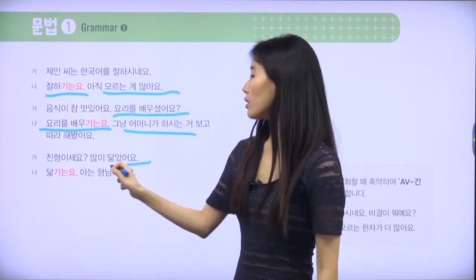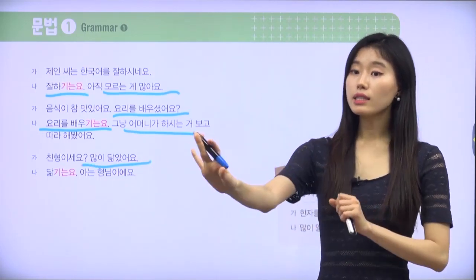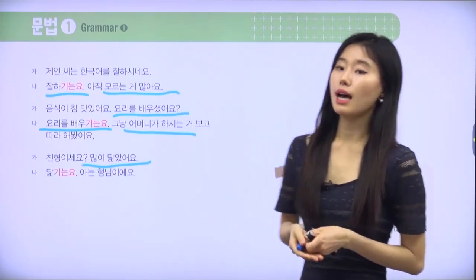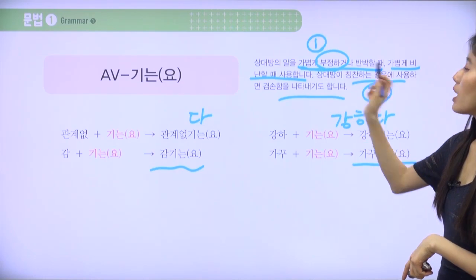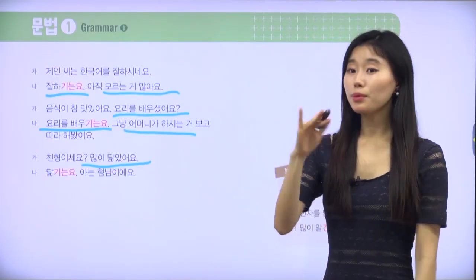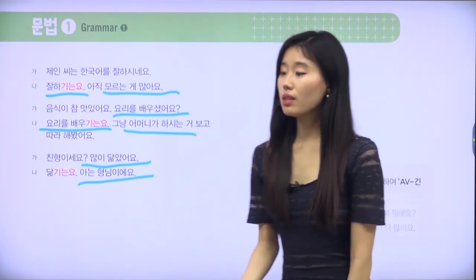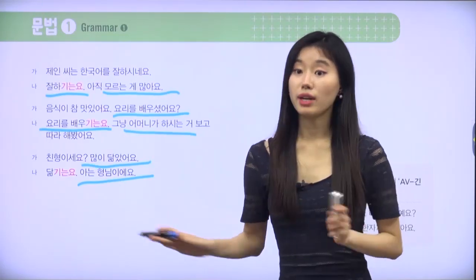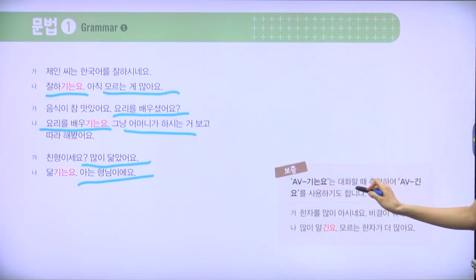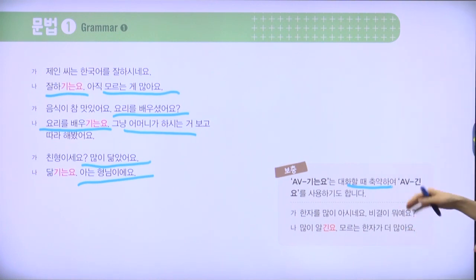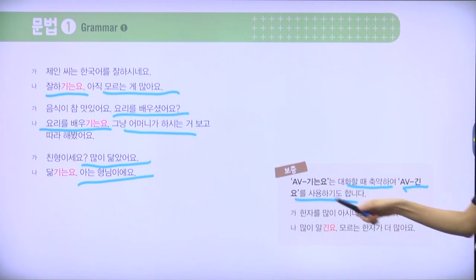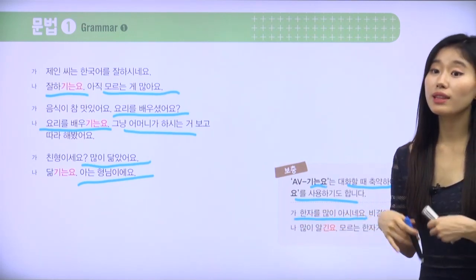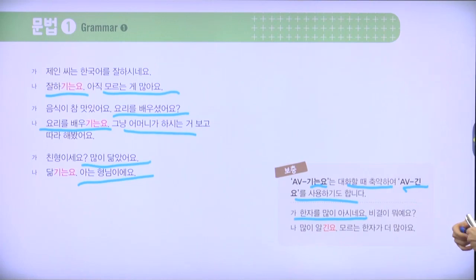친형이세요? 되게 닮았어요 — 'Are you actual siblings? You look very alike.' 아이고, 닮기는요 — this one is NOT being humble, it's casual disagreement. 저 그렇지 않아요, 그냥 아는 형님이에요 — 'We're not siblings, he's just an older friend I know.' Also, when speaking in conversation we can shorten 기는요 — 축약해서 긴요 to use the abbreviated form.